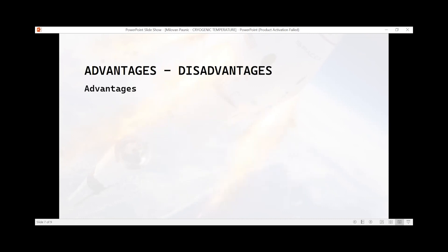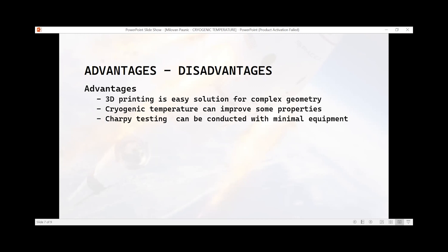The advantages of 3D printing is easy solution for making complex geometry parts. In cryogenic temperature, it's shown that some properties can be improved, like tensile and bending. Charpy testing can be conducted with minimal equipment at room temperature, no need for storage, and that is useful for 3D printing in space missions where damaged parts can be printed and replaced in space station.